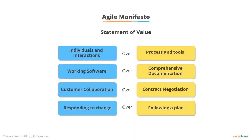Before you take your Agile Scrum Foundation certification exam, I recommend you memorize these four lines — we call them the statement of value. You can see that on the right-hand side, those are items that are more relevant for the traditional or waterfall approach.